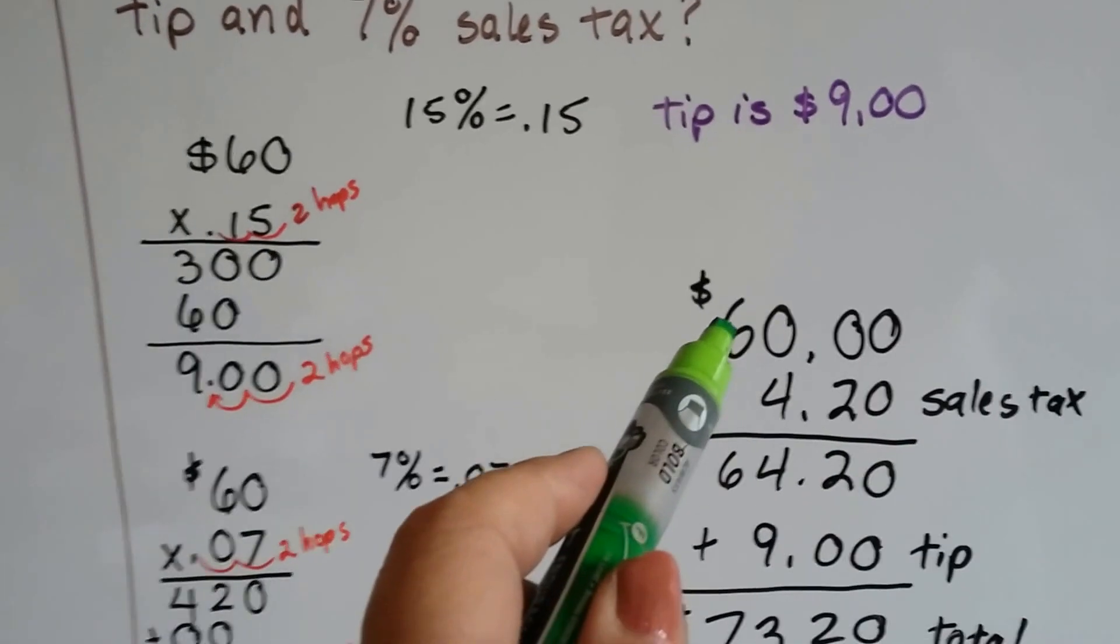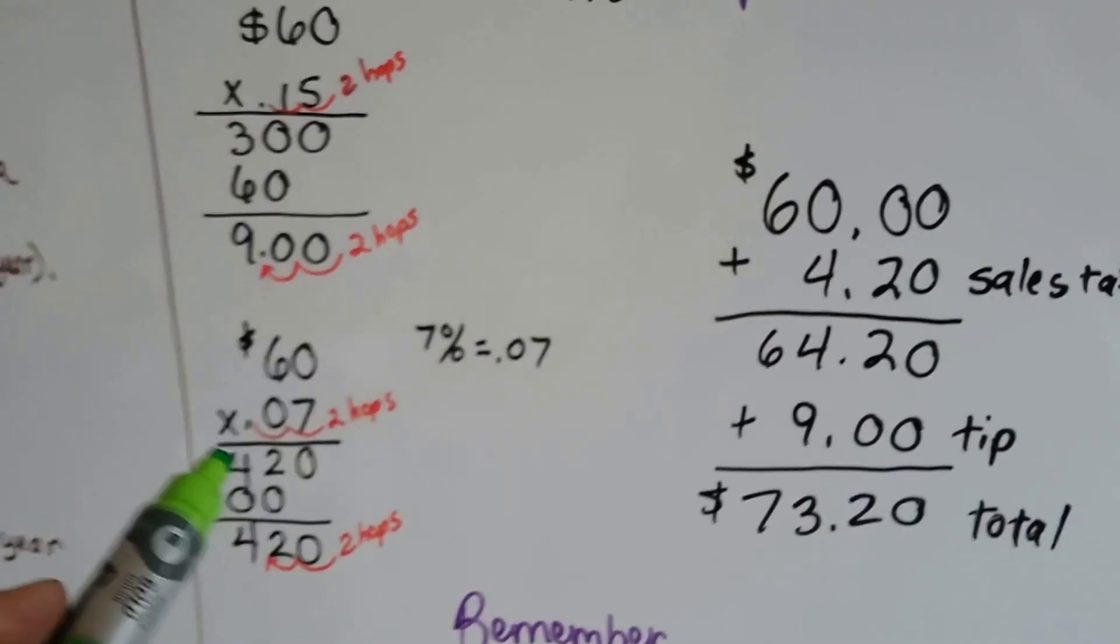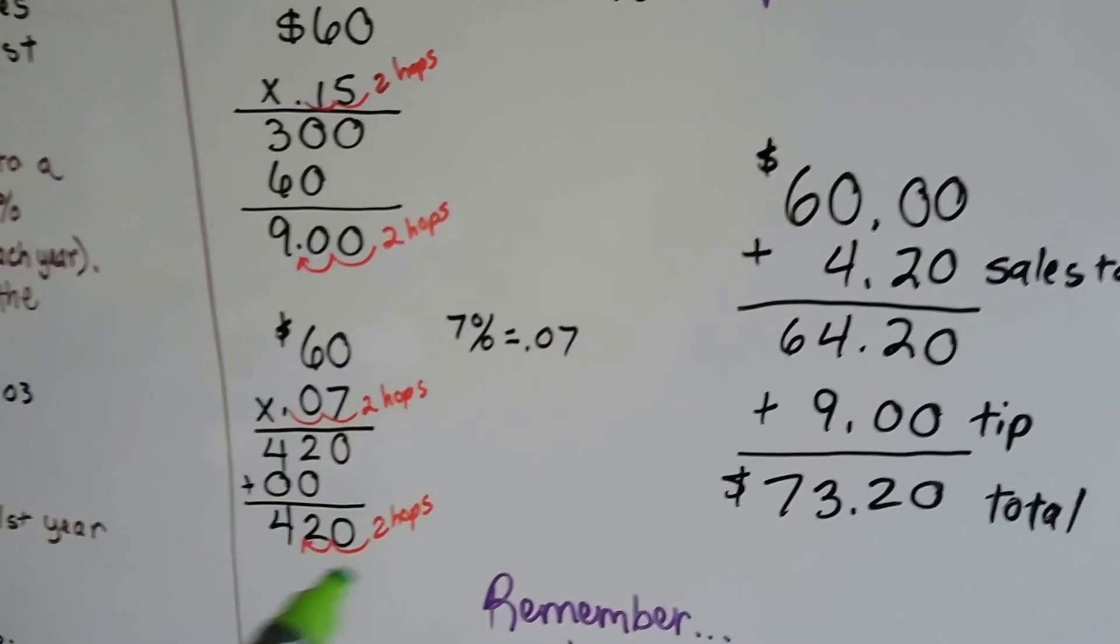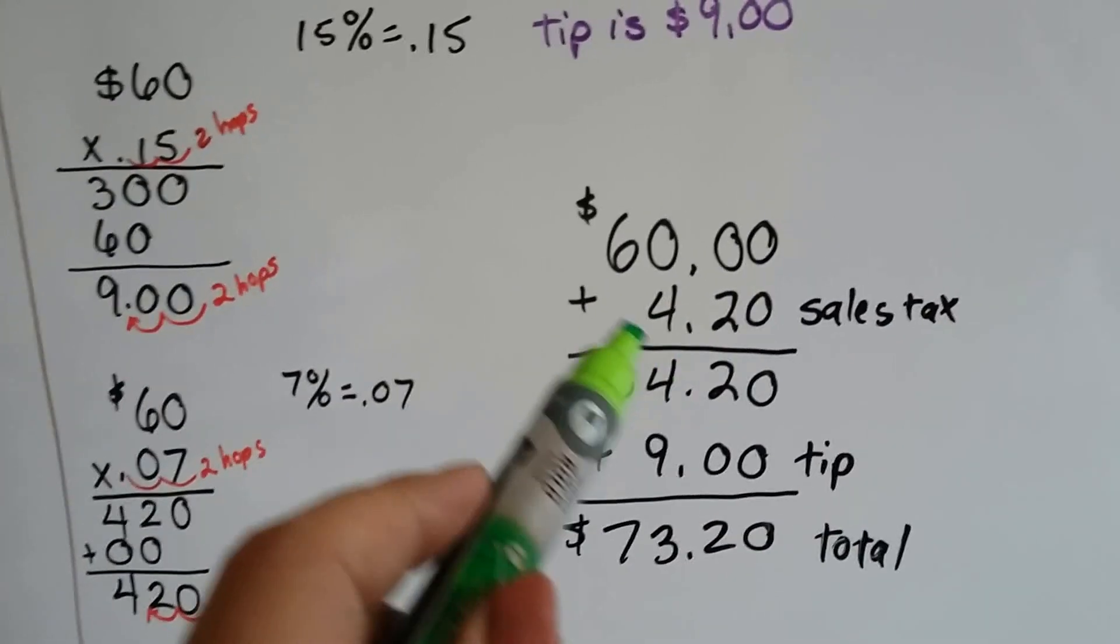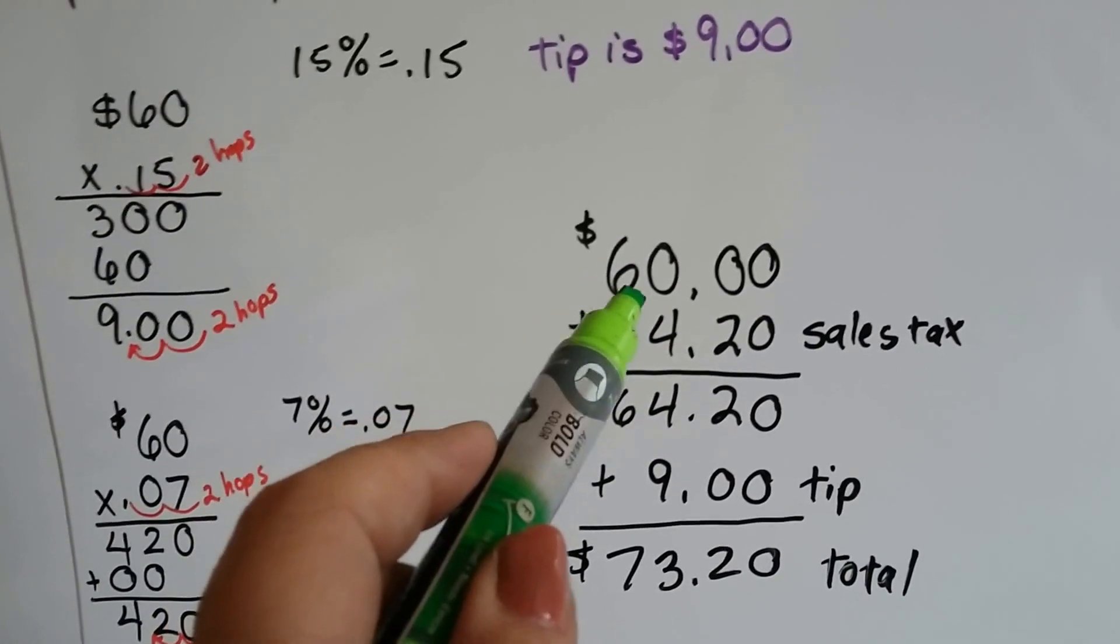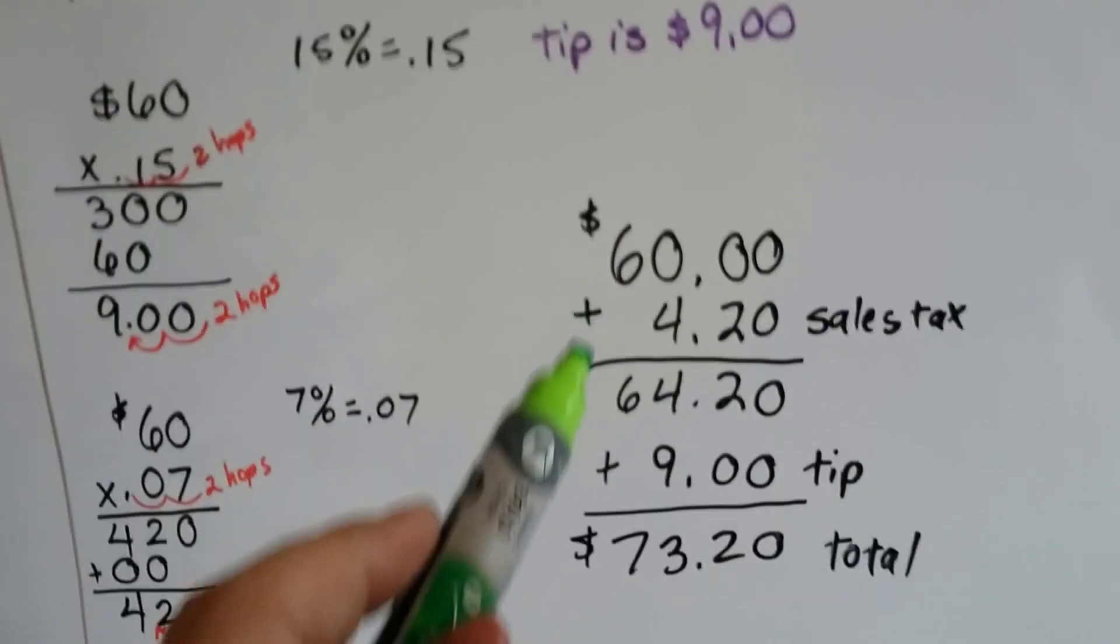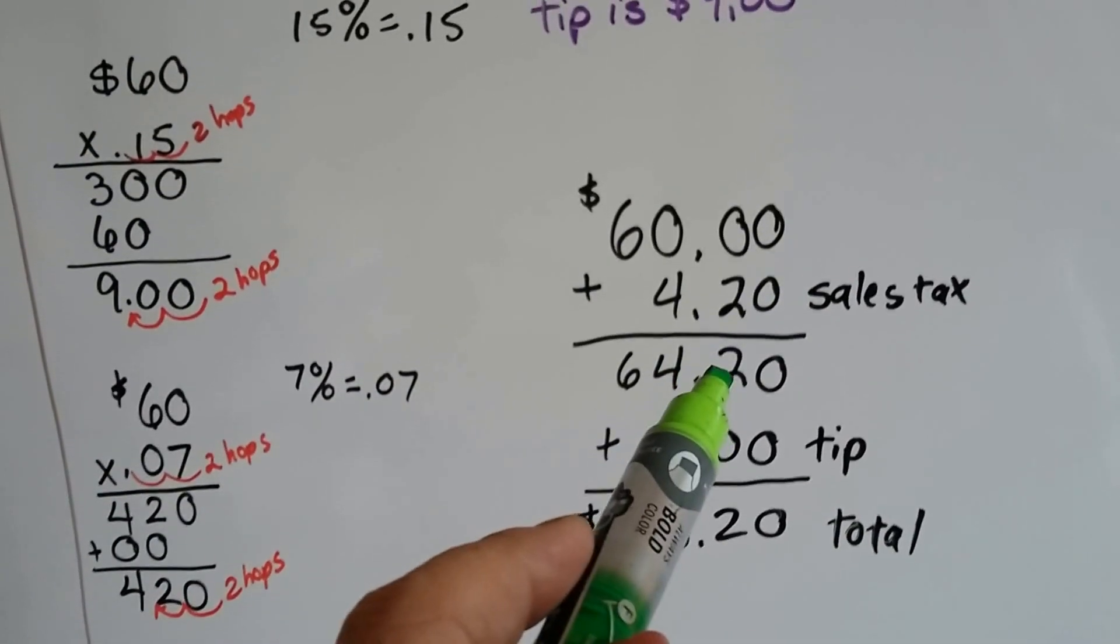So the bill is $60. We multiply it by .07 and we come up with $4.20. And we add the $4.20 to the $60, the original bill, and we get $64.20.